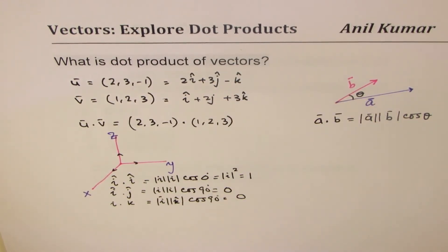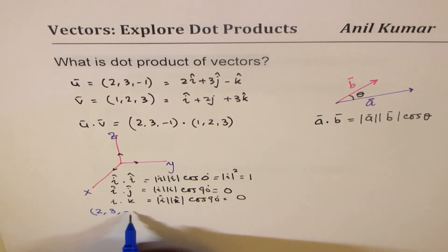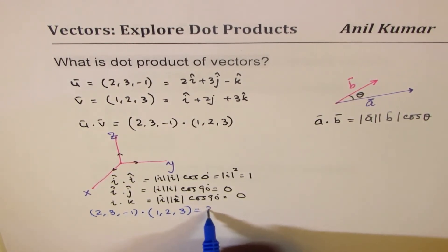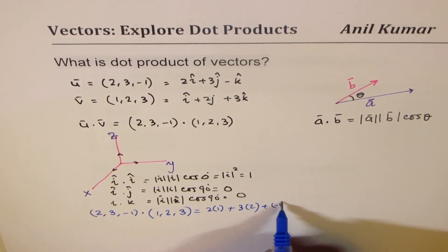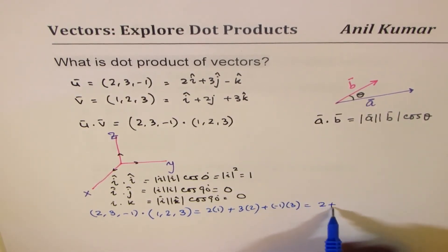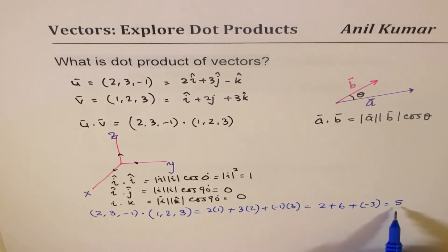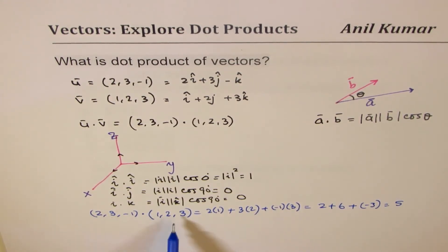What this tells us is that when you take the dot product, the i-components get multiplied, j-components get multiplied, and k-components get multiplied. So the dot product of u · v = (2, 3, −1) · (1, 2, 3) = 2×1 + 3×2 + (−1)×3 = 2 + 6 − 3 = 5. It results in a scalar quantity.